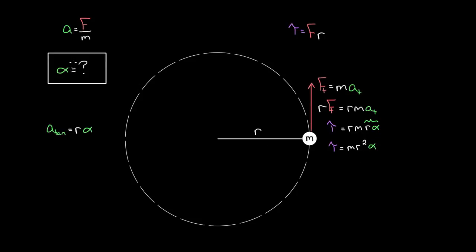Combining the two R's gives torque equals M times R squared times alpha. Now we're close. This is the rotational analog of Newton's second law. We can solve for alpha: the angular acceleration equals the torque divided by M R squared. This M R squared term is serving the same role that mass did for regular acceleration in Newton's second law.